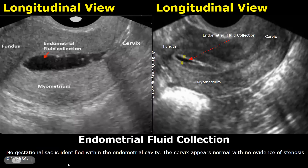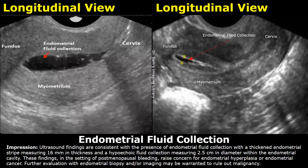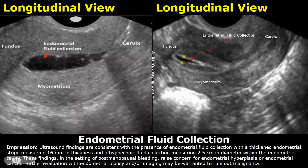You can end the findings section by writing about the gestational sac and the appearance of the cervix. In the impression, you can mention the presence of endometrial fluid collection, then the endometrial thickness, followed by mentioning hypoechoic fluid collection and its measurement. You can also write the patient history in the impression, then write: 'Raises concern for endometrial hyperplasia or endometrial cancer.' After that, mention: 'Further evaluation with endometrial biopsy and/or imaging may be warranted to rule out malignancy.'